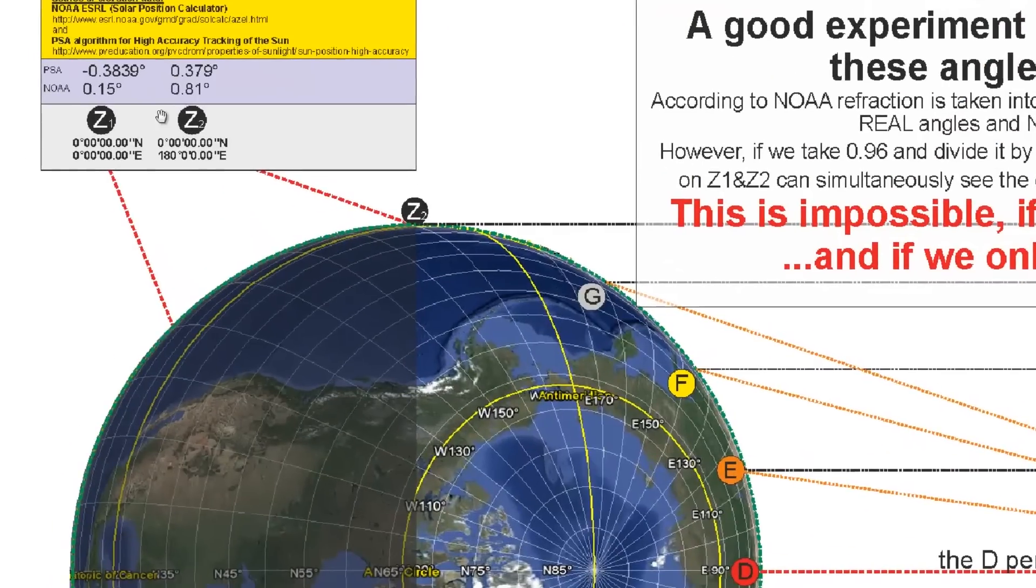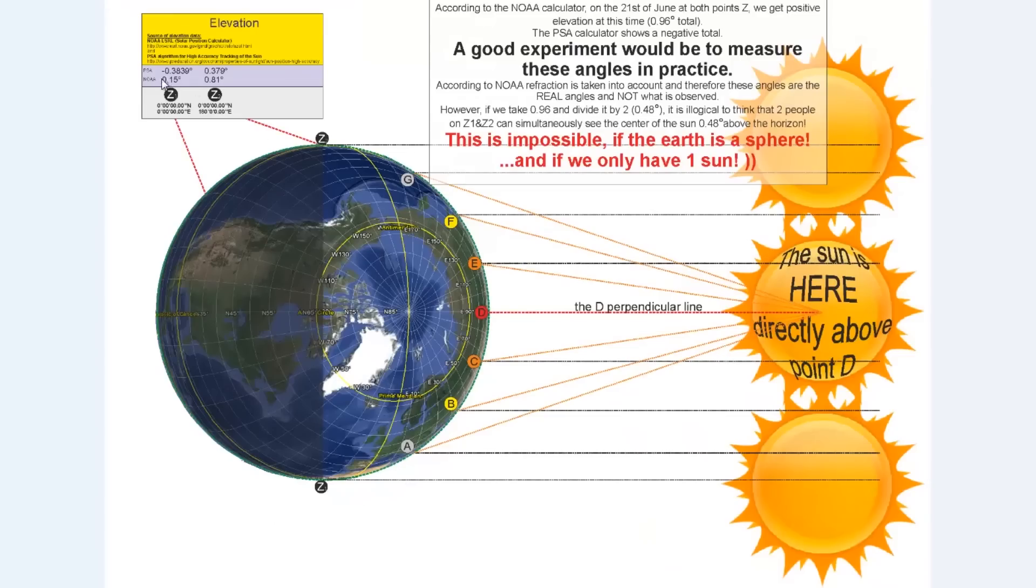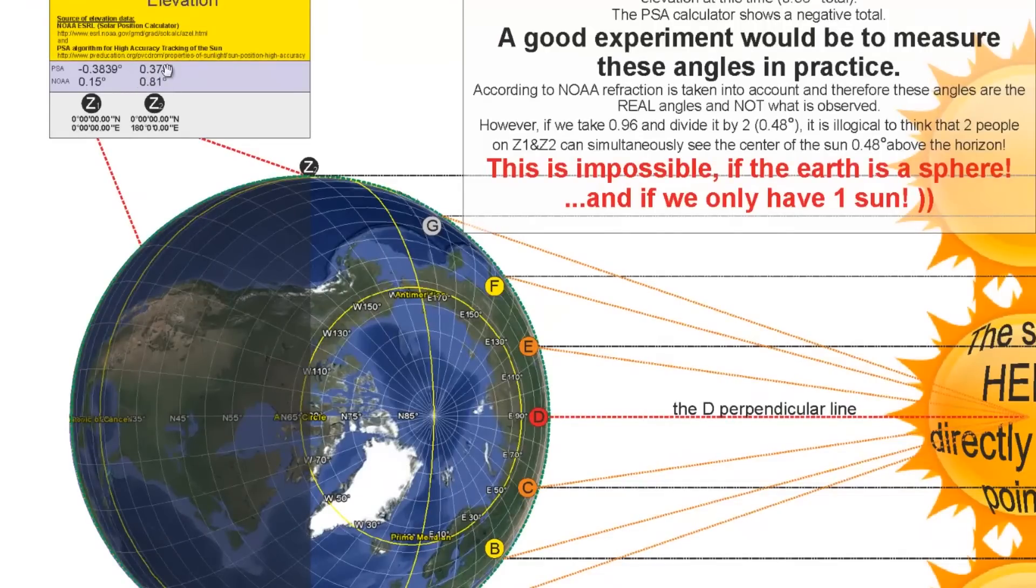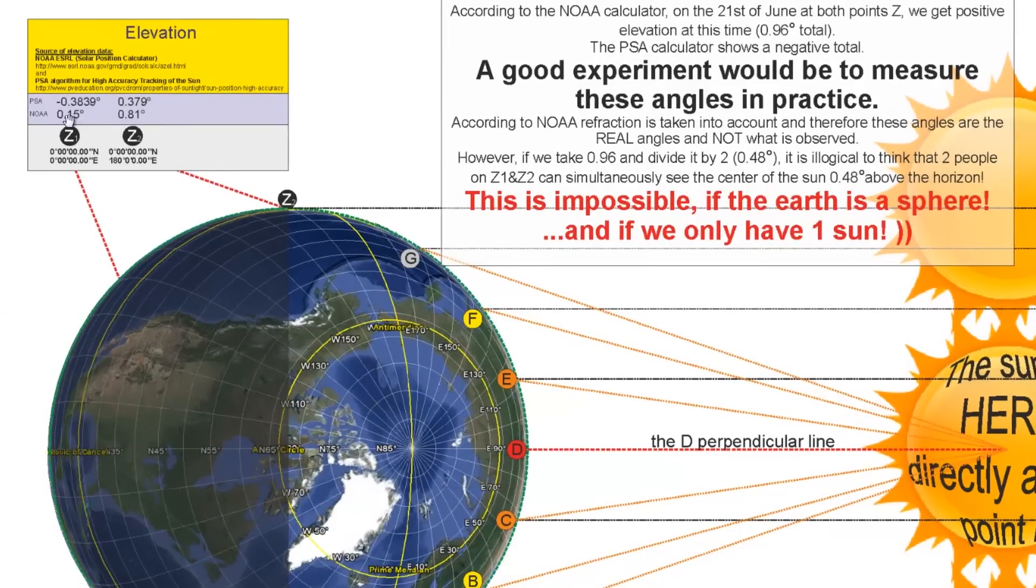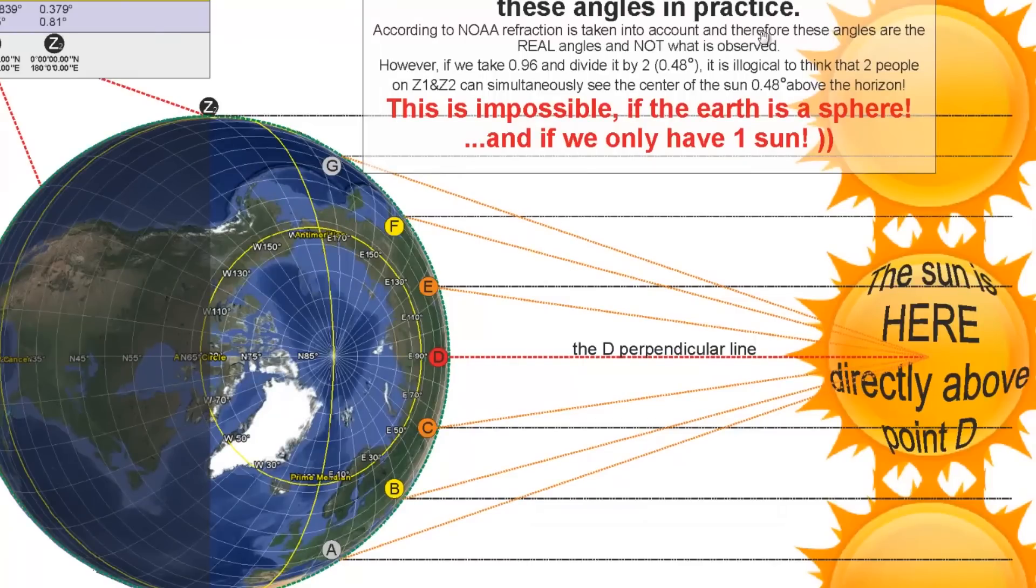Let's go and have a look at points Z1 and Z2. We get two divergent answers from the calculators regarding these two points, as you can see here. So according to the NOAA calculator, on the 21st of June at both Z points, we get positive elevation at this time, which is about 0.96 in total. The PSA calculator shows a negative total. A good experiment would be to measure these angles in practice. Now, according to NOAA, refraction is taken into account, and therefore, these angles are the real angles and not what is observed. However, if we take 0.96 and divide it by 2, that's 0.48 degrees.